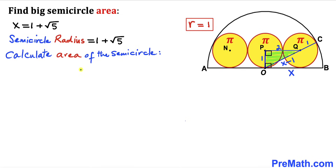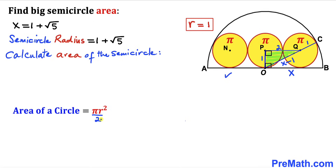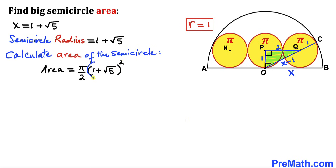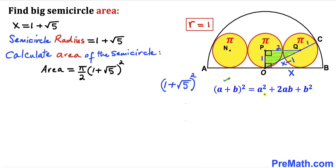Now let's calculate the area of the semicircle. Recalling the area of a circle formula: area = πr². Since we are dealing with a semicircle we divide by 2, so the area = (π/2) · (1 + √5)². Expanding (1 + √5)² using (a + b)² = a² + 2ab + b² gives 1 + 2√5 + 5.